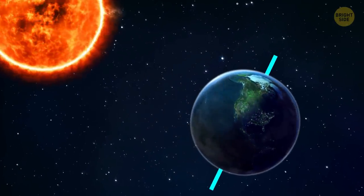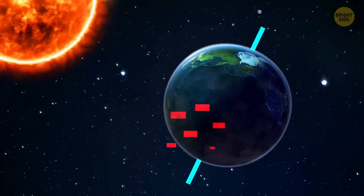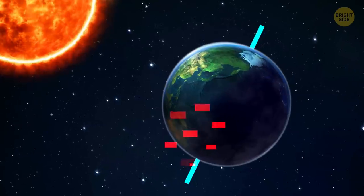So at one time of the year, the northern part of the Earth catches more sunlight. And at another time, it's the southern part's turn to get more warmth.